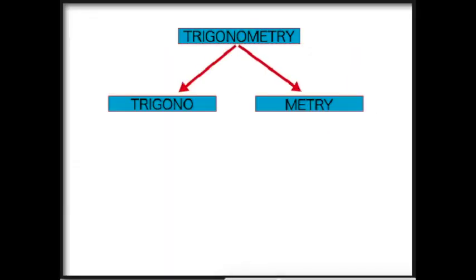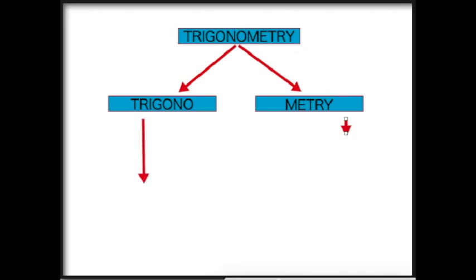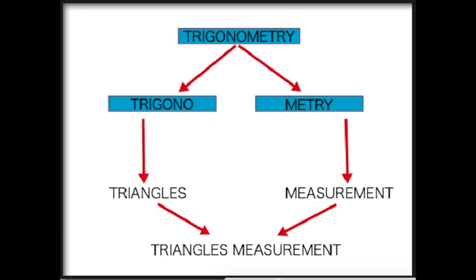The word trigonometry comes from two Greek terms: trigon meaning triangle and metron meaning measure. The study of trigonometry involves triangular measurements.